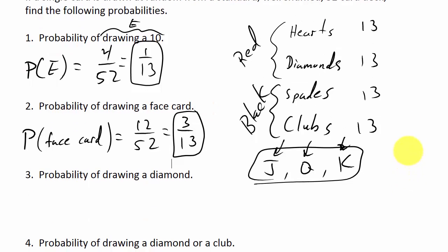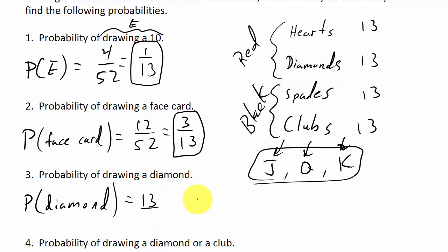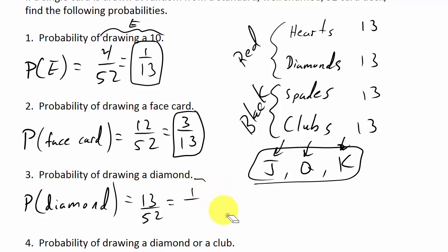What's the probability of drawing a diamond? There are 13 diamonds out of 52 possible outcomes, so that's 13/52, which simplifies to 1/4.